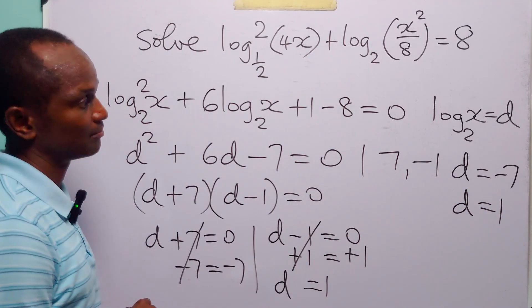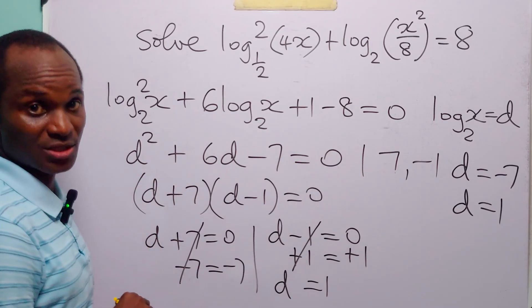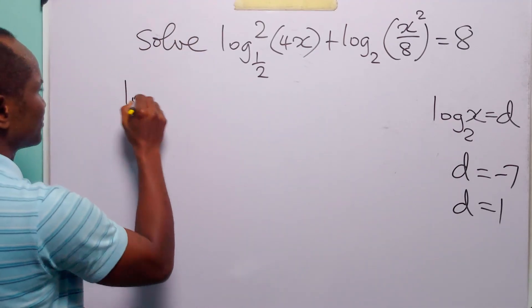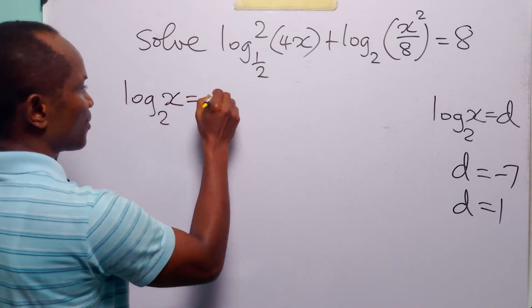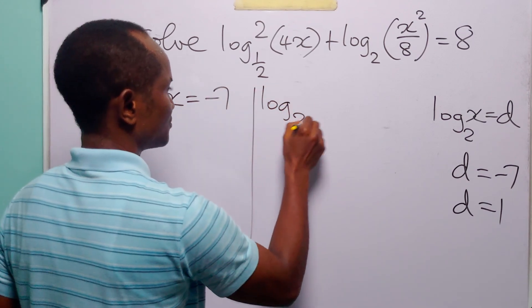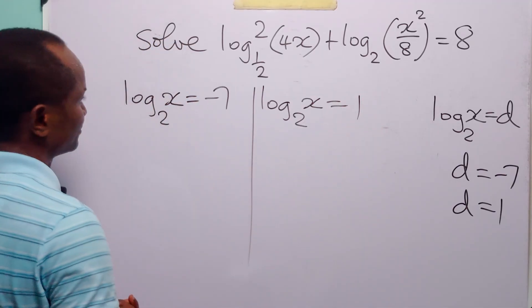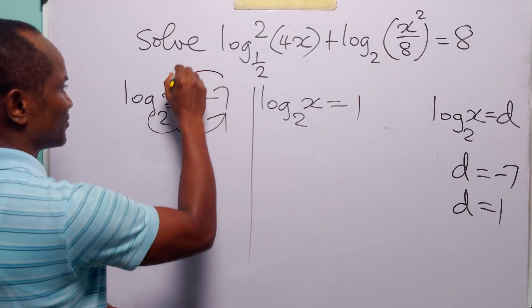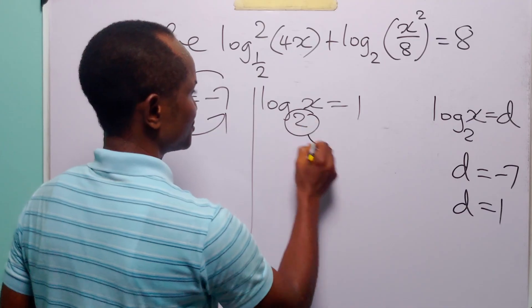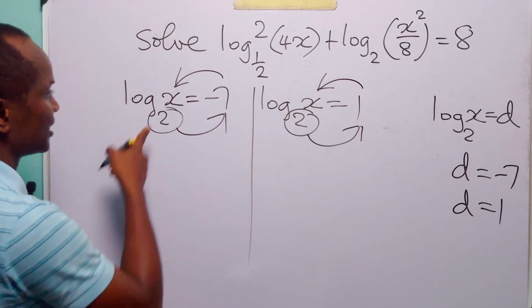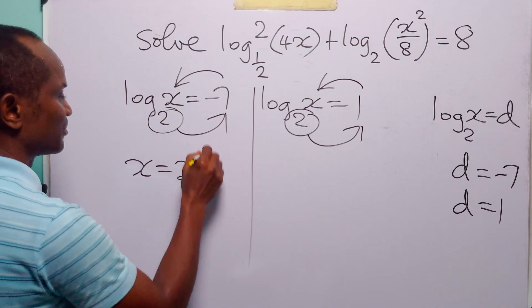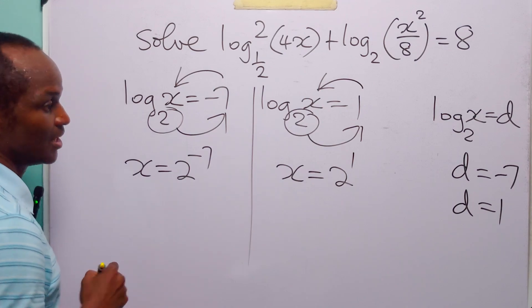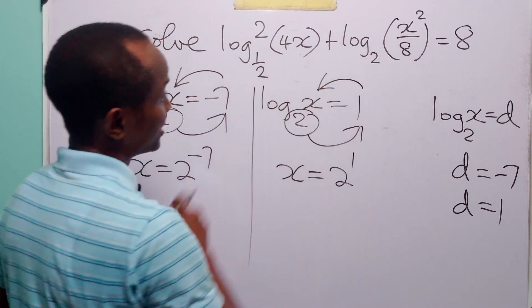So we have found the two values of d that satisfy this quadratic equation. Since d equals log to base 2 of x, we have that either log to base 2 of x equals minus 7 or log to base 2 of x equals 1. This means 2 to the power minus 7 equals x, or 2 to the power 1 equals x. So x equals 2 to the power minus 7, and x equals 2. These are the two values of x that satisfy this logarithmic equation.